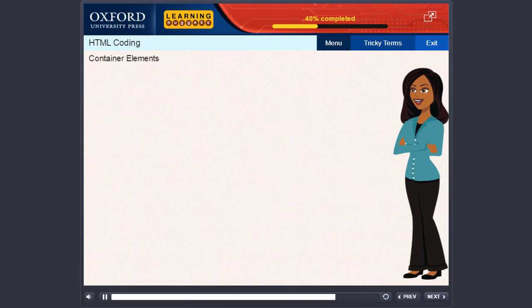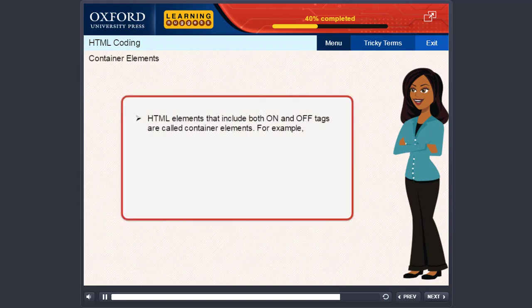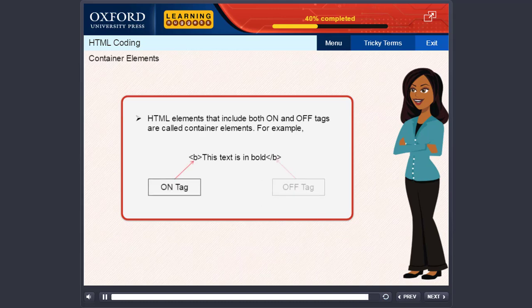Container elements. HTML elements that include both on and off tags are called container elements. For example, the B element. The tag to your left is the on tag while the tag to your right is the off tag.